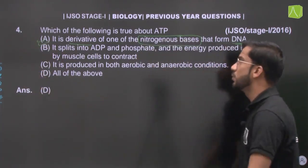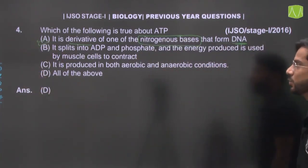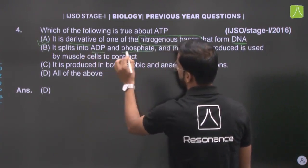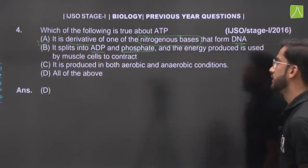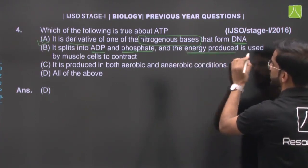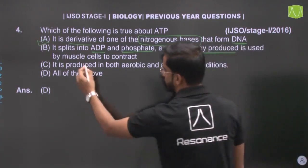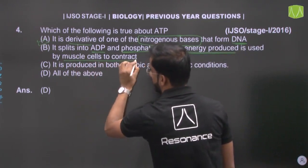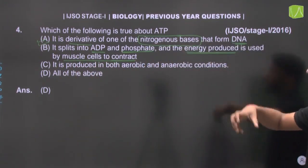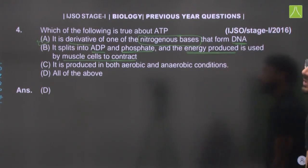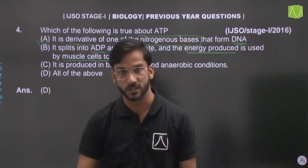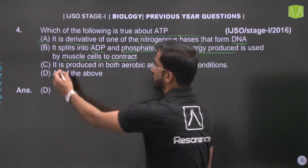Second: ATP splits into ADP and one phosphate molecule. The energy produced from this is used by muscle cells for contraction. So ATP releases one phosphate molecule, that produces energy, and our muscle cells use that energy for contraction. Option B is also correct.